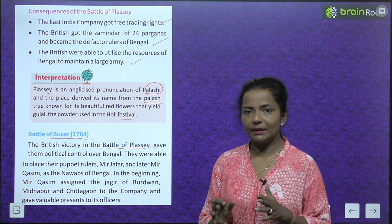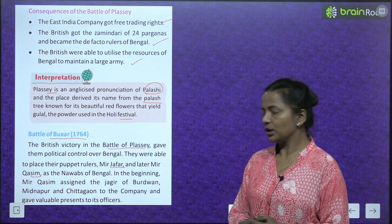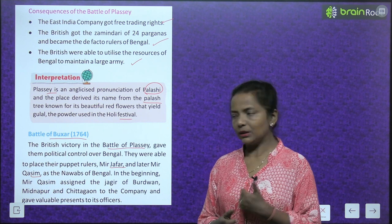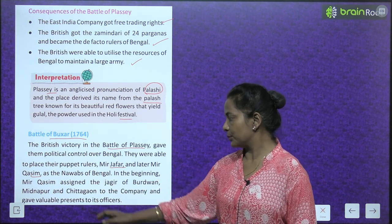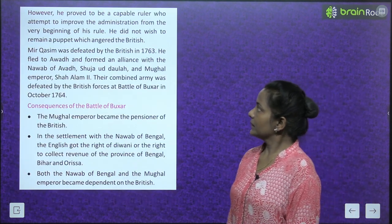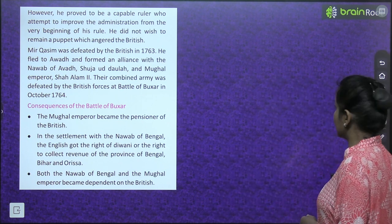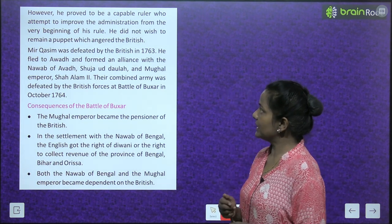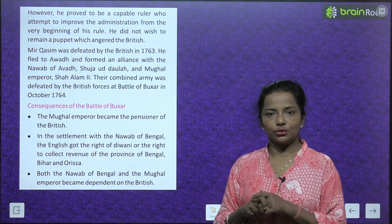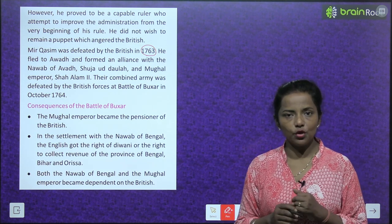After the Battle of Plassey, the British got control of Bengal. They were able to place their puppet rulers — Mir Jafar and later Mir Qasim — as the Nawabs of Bengal. In the beginning, Mir Qasim assigned the jagirs of Bardhwan, Midnapur, and Chittagong to the company and gave valuable presents to its officers. However, he proved to be a capable ruler who attempted to improve the administration. He did not wish to remain a puppet, which angered the British. Mir Qasim was defeated by the British in 1763.